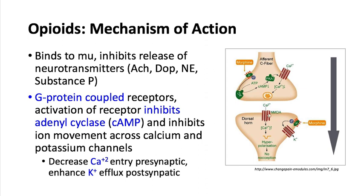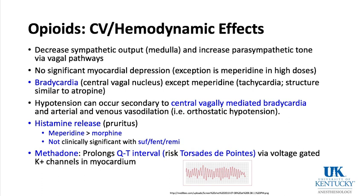Cardiovascular and hemodynamic effects of opioids: when we give opioids, we decrease sympathetic output from the medulla and increase parasympathetic tone via vagal pathways. There is no significant myocardial depression — the exception being high doses of Demerol, which are not used. Fentanyl, sufentanil, and remifentanil are considered cardiac-safe. Bradycardia can occur through stimulation of a central vagal nucleus. An exception is meperidine, whose chemical structure resembles atropine and can actually cause tachycardia.